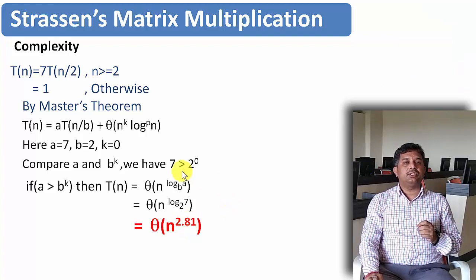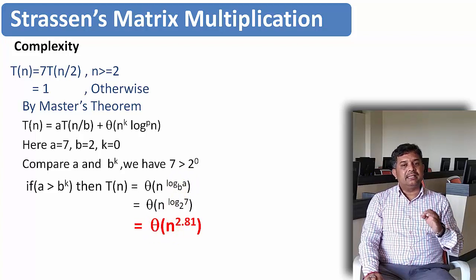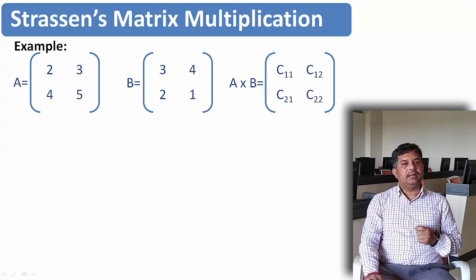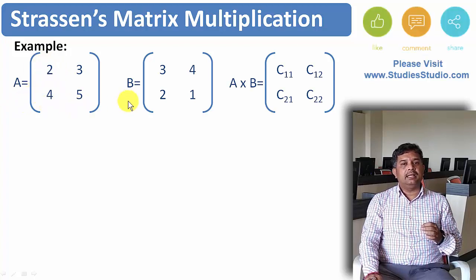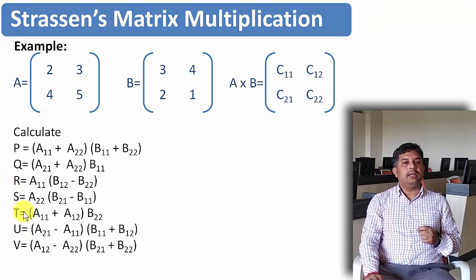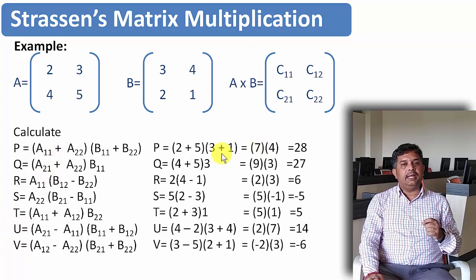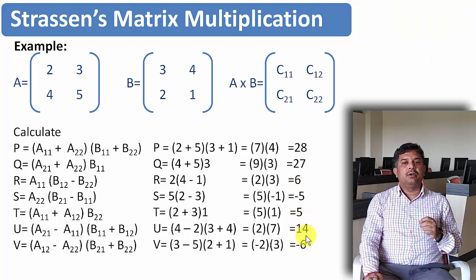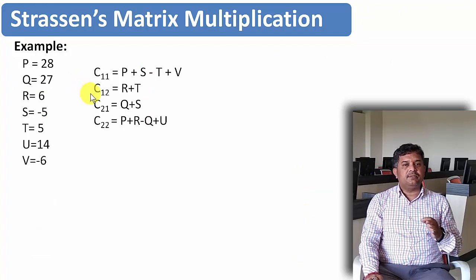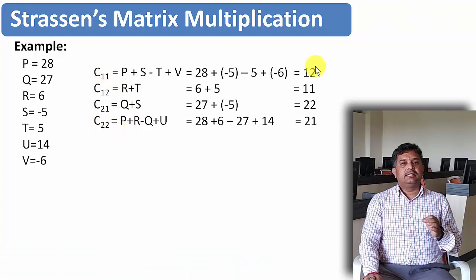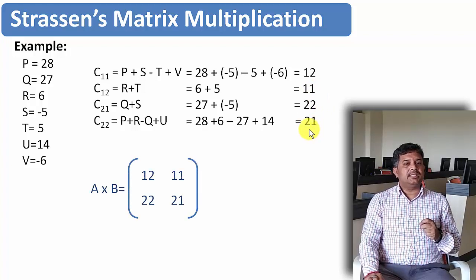Let us take an example to understand this matrix multiplication. Say A = [[2, 3], [4, 5]] and B = [[3, 4], [2, 1]], and we are trying to find A×B. The calculated values are: p = 28, q = 27, r = 6, s = −5, t = 5, u = 14, and v = −6. Substituting these values to find C11, C12, C21, C22, we get C11 = 12, C12 = 11, C21 = 22, and C22 = 21. So this is our matrix multiplication result.